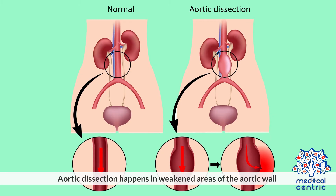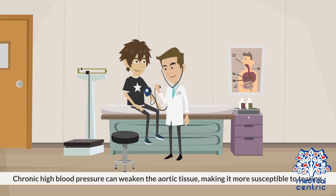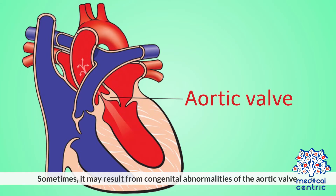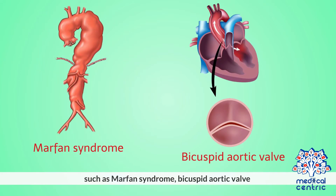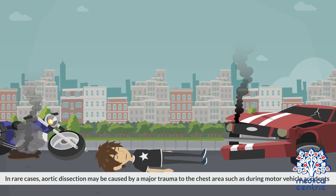Aortic dissection happens in weakened areas of the aortic wall. Chronic high blood pressure can weaken the aortic tissue, making it more susceptible to tearing. Sometimes it may result from congenital abnormalities of the aortic valve, such as Marfan syndrome or bicuspid aortic valve. In rare cases, aortic dissection may be caused by a major trauma to the chest area, such as during motor vehicle accidents.